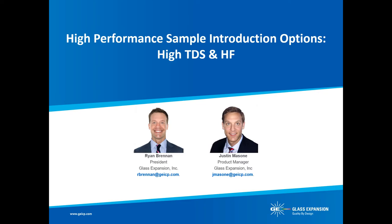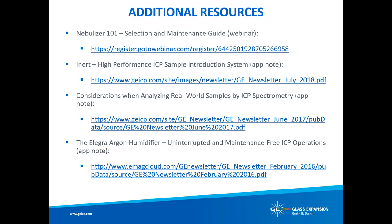Thank you, Bob. As we all know, it is important to optimize your ICP sample introduction system to best suit your sample types. In our presentation today, we will cover how to handle challenging sample matrices such as high total dissolved solids — which we'll refer to as TDS — and hydrofluoric acid — which we'll refer to as HF — and overcome the challenges associated with these sample types, which include interrupted runs, signal drift, clogged nebulizers, shortened torch life, and interferences.